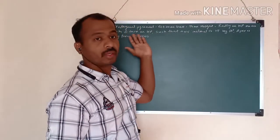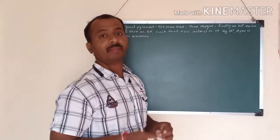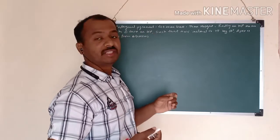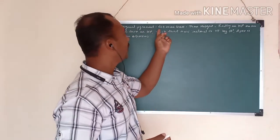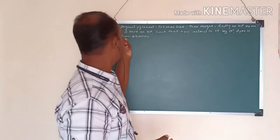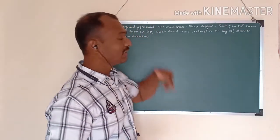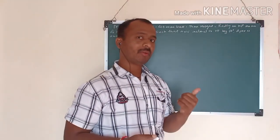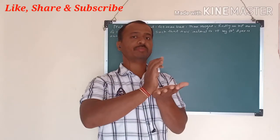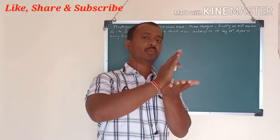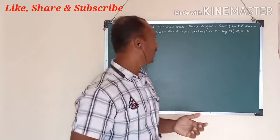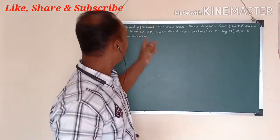In today's lecture, we will see the pentagon pyramid problem. Here is a pentagon pyramid which has a 40mm base and 70mm height. It is resting on HP on one of its triangular faces. The problem is that the pentagon pyramid is resting on one of its base edges, inclined to VP, with the base inclined to VP and the axis inclined to HP.